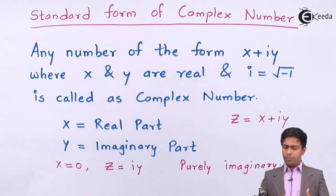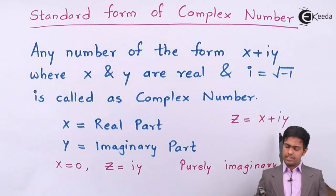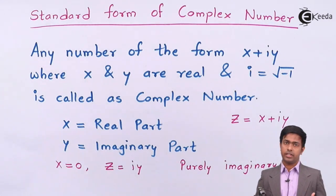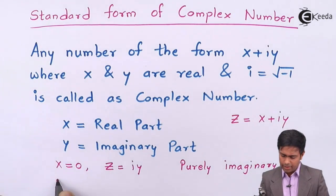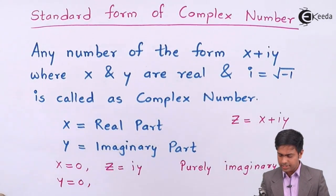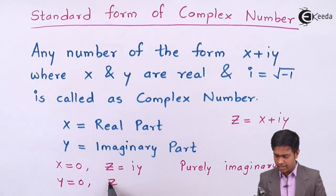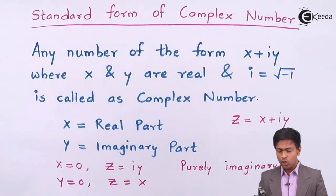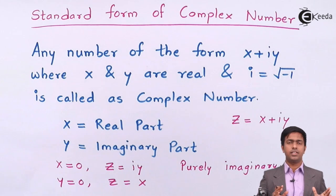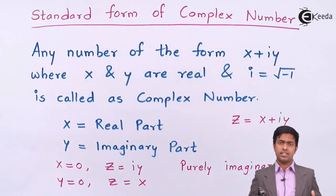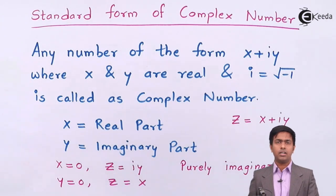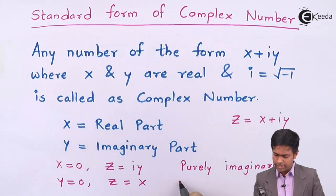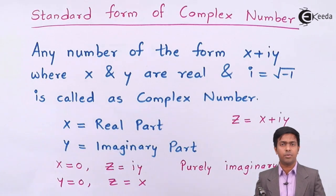Now, is it possible that y can be zero? Yes! Whenever the second part iy is zero — meaning y is zero — then z equals x. There is no imaginary part remaining. If there is only a real part and no imaginary part, it becomes a real number. Such a number is called a purely real number.